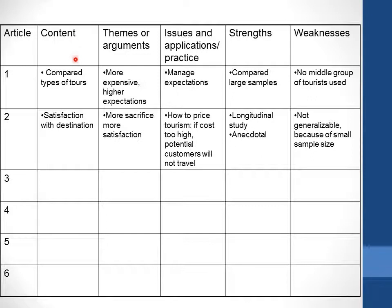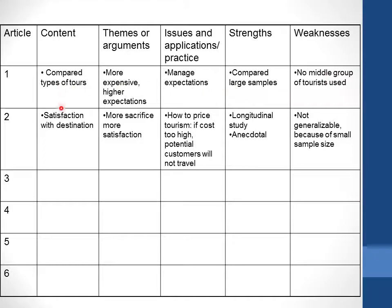In one column for each article, identify the key points, facts, or information you're actually going to use in your piece of writing. Then record what the main ideas or main arguments are — this is big picture stuff. In the next column write down the issues and applications, or how these ideas might or might not work in practice. Next, put down the strengths of the writing or research, and in the final column put the weaknesses. This helps you think broadly about the research and see similarities and differences between different authors writing in that field.